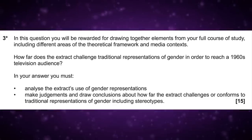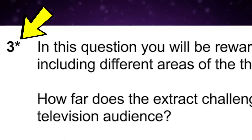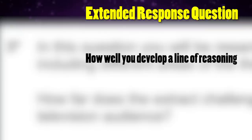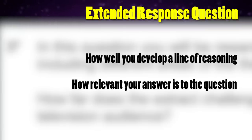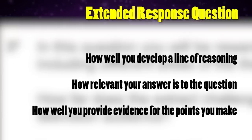What is different about question 3 is that we now have an asterisk next to the question. This tells you that this is an extended response question, meaning you will be marked on the quality of your essay in terms of how well you develop a line of reasoning — i.e. an opinion — how relevant your answer is to the question, and how well you provide evidence for the points you make.